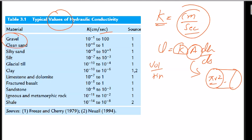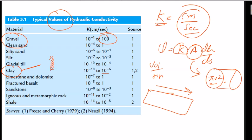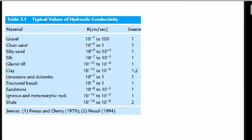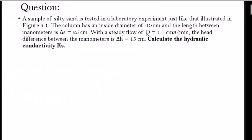Looking at typical values of hydraulic conductivity: gravel has very high values — up to 100 centimeters per second. Clay has the lowest hydraulic conductivity, around 10 to the power of minus 6 centimeters per second, because clay is impervious — porous but impervious. That's why in most dams a clay core is used to prevent water flow. So hydraulic conductivity is a physical parameter of the rocks or samples.